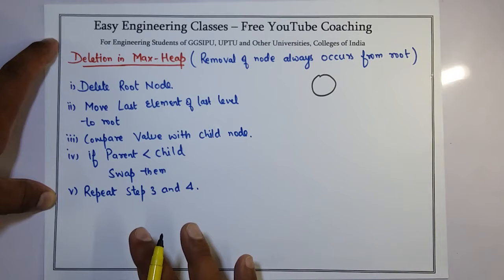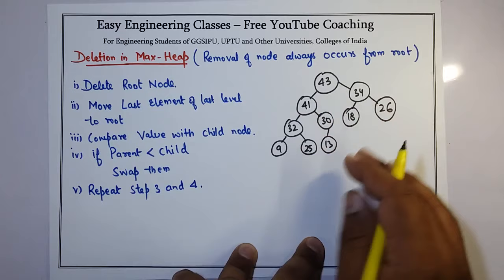Repeat steps 3 and 4 until the heap property holds. Now this is the tree that we drew in the previous lecture.